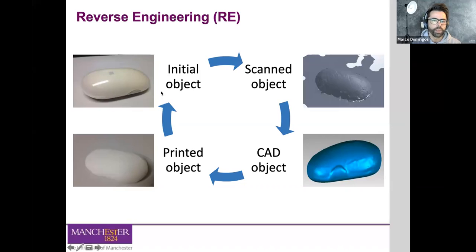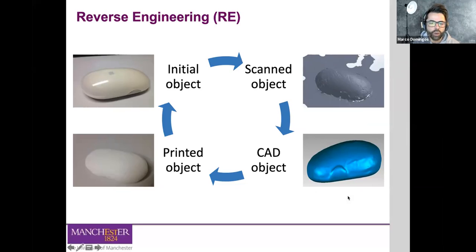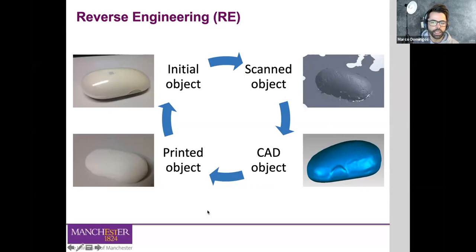Here's an example: we have a mouse with no digital support. We do a 3D scan of the object and obtain a point cloud containing all the information about its surface. This is then converted into a mesh and automatically into a CAD file — your digital support to generate the STL file, slice it, and print it. You can print it as-is, or introduce modifications to the design before printing.